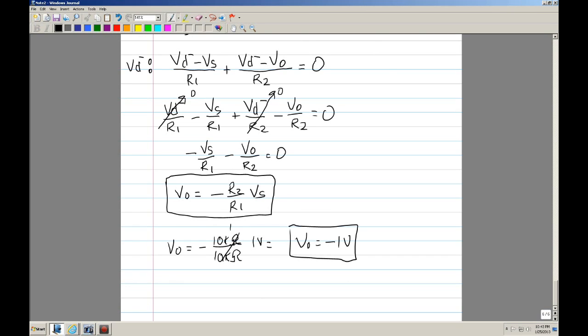That should be enough to cover chapter 2.2. The next section will be the effects of the finite open loop gain. That will be the third video. Thank you for watching.